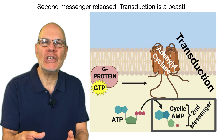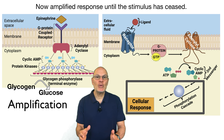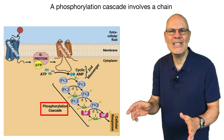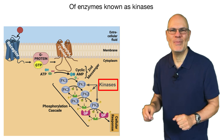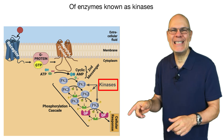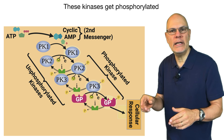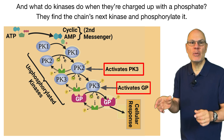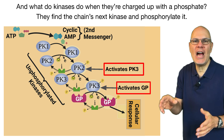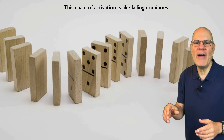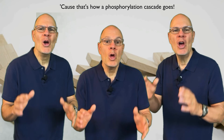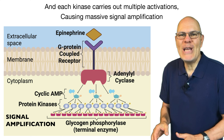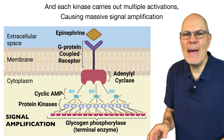A phosphorylation cascade involves a chain of enzymes known as kinases. These kinases get phosphorylated — meaning they gain a phosphate — which activates them. When charged up with a phosphate, each kinase finds the chain's next kinase and phosphorylates it. This chain of activation is like falling dominoes — that's how a phosphorylation cascade goes — and each kinase carries out multiple activations, causing massive signal amplification.